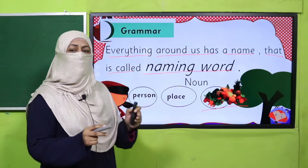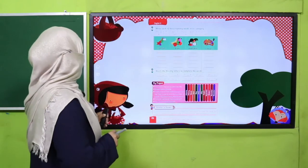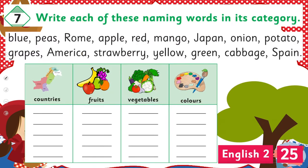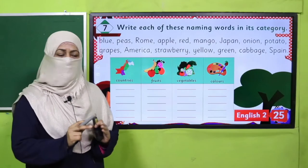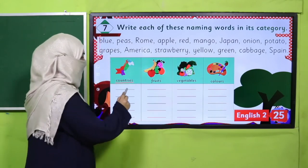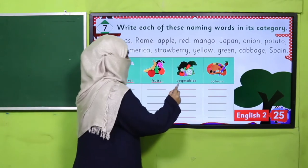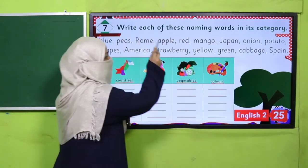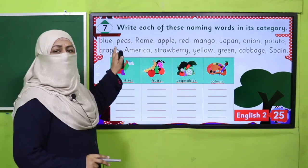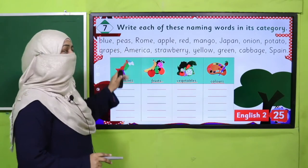Today we learn to classify. Here is an activity in your book — all of you open your book. A word bank has been given to you and you have to divide it into four categories: one is countries, another is fruits, another is vegetables, and another is colors. All these names will belong to one of these four categories. You will read each name and find out which category it belongs to.